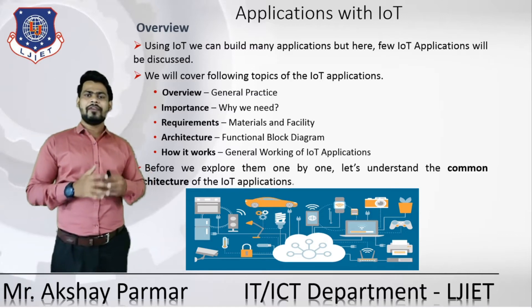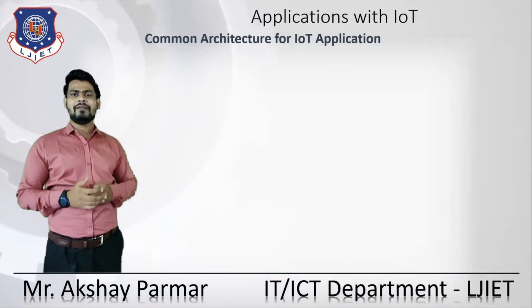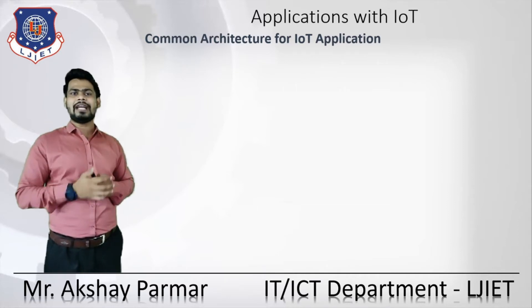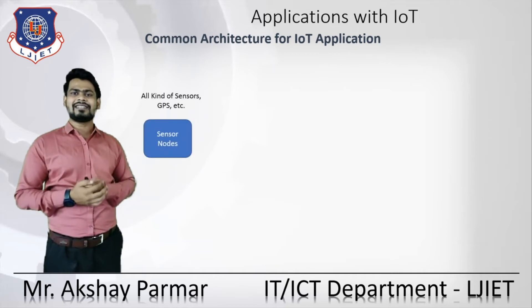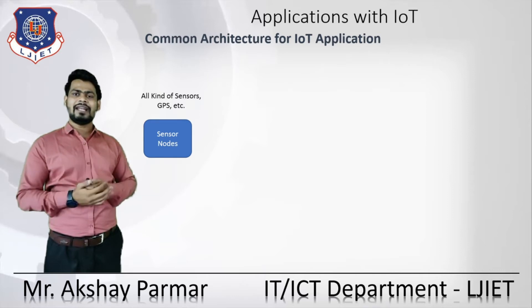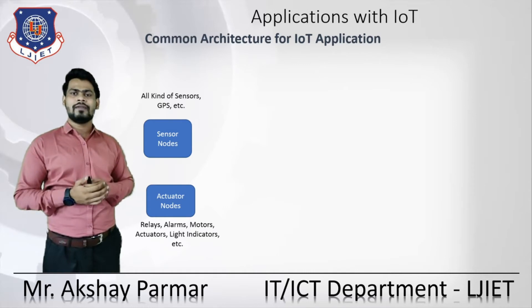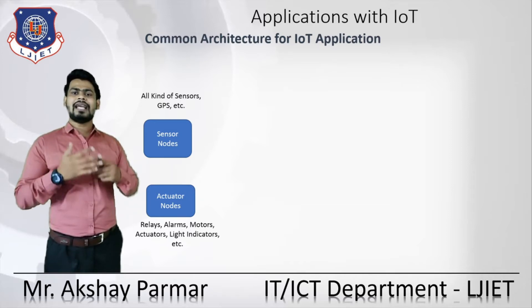Before we explore them one by one, let's understand the common architecture that all IoT applications share. What is the starting point of any IoT application? The IoT application starts from the sensors. The sensor nodes are sensing the data from their surroundings — sensing the physical property. We can have any kind of sensor node, such as GPS sensors, temperature sensors, and more.